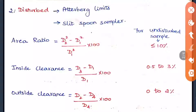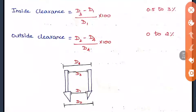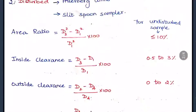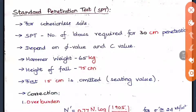Looking at the sampler diagram, there is a sampling tube with a cutting edge at the bottom, with dimensions d1, d2, d3, and d4. The area ratio formula is (d2² − d1²) / d1² × 100, and for an undisturbed sample it should be ≤ 10%. Inside clearance is (d3 − d1) / d1 × 100 with a range of 0.5–2.3%, and outside clearance is (d2 − d4) / d4 × 100 with a range of 0–2%.